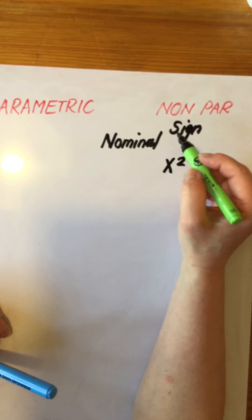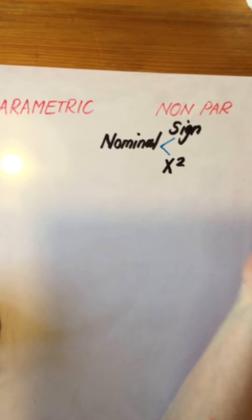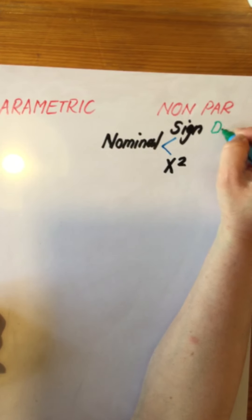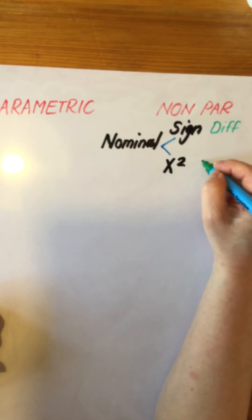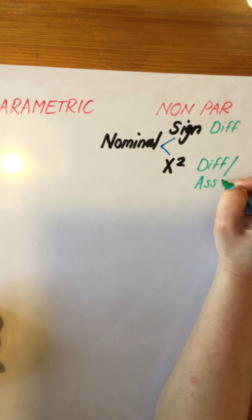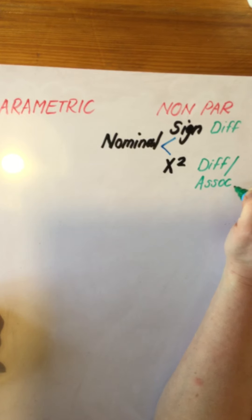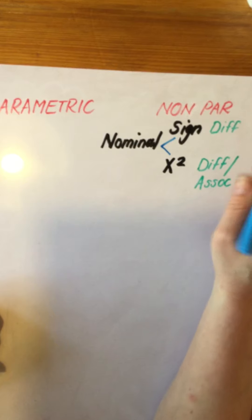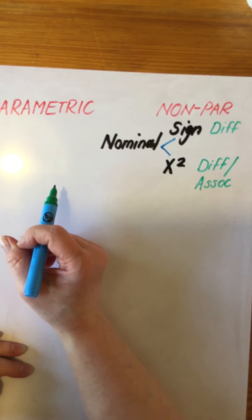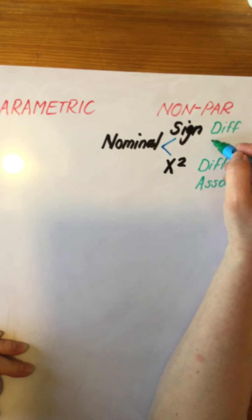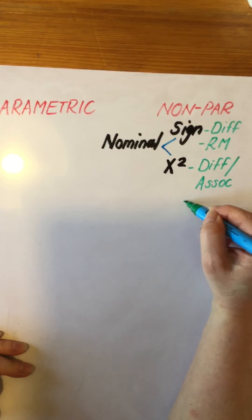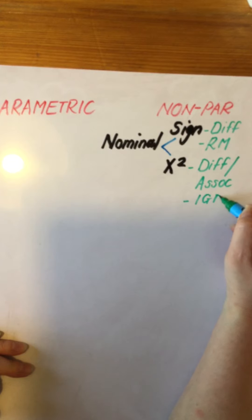Remember, chi-squared is spelt C-H-I but always pronounced 'chi'. Nominal data has been used for both. The sign test and chi-squared are both tests of difference. Remember, when we use chi-squared, we also talk about it being a test of association — so difference or association. When we use sign, we always have a repeated measures design, whereas when we use chi-squared, it's because an independent groups design has been used.